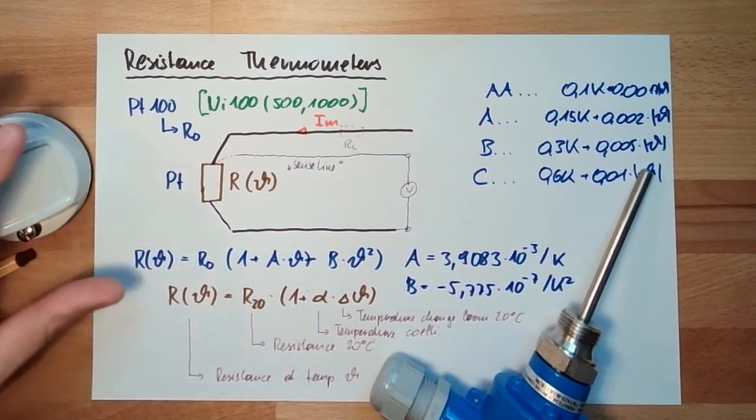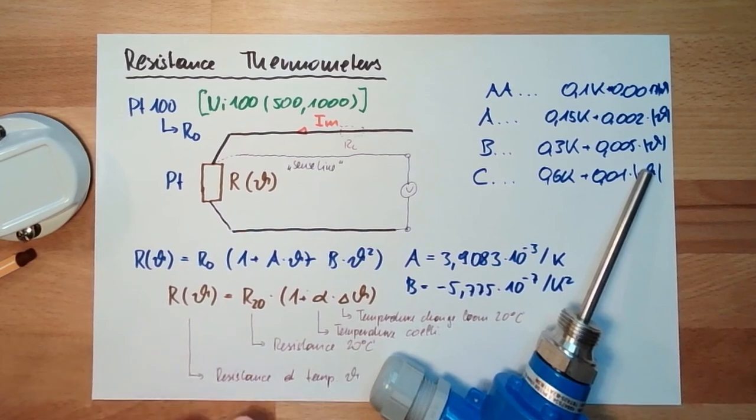This is how resistance thermometers are working. Remember PT100 is the most used, this NTC and PTC stuff is used usually on chips and so on, that's it. Next time we're talking about something else. Next time we are talking about the so-called thermo elements. There's an effect, Seebeck effect. I will explain what this means, this Seebeck effect, and how this is used. For this time, thank you very much for listening and goodbye.